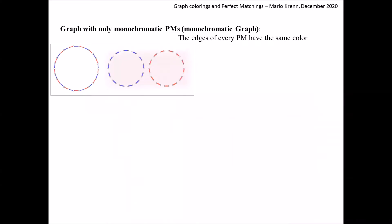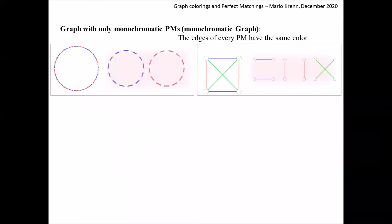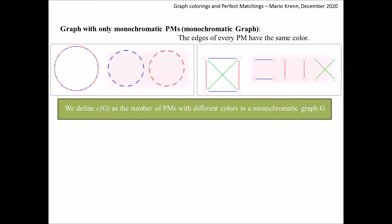We can now try whether we find more monochromatic graphs. It turns out that a cycle graph with alternating colored edges is always a monochromatic graph. We can also quickly find that a complete graph of four vertices with a special color assignment is a monochromatic graph with three colors. The number of colors is interesting, so let's define C as the number of perfect matchings with different colors in a monochromatic graph G. The cycle graph therefore has C equals two, and the complete graph has C equals three.